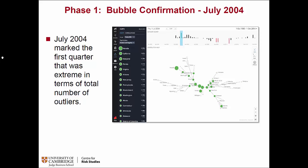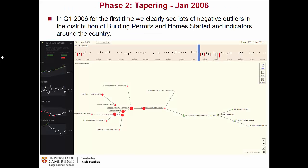In 2004 it gets even stronger — across the entire system, even faster growth and more outliers, now spreading to states where you don't usually see so much construction, like Nevada. The whole tree is infected with excessive growth at that point. Then in 2006 we see a reversal. Looking at construction indicators — buildings started and building permits — it's all in red, meaning negative growth. These are also outliers, and there are quite a few of them across a big part of the system.